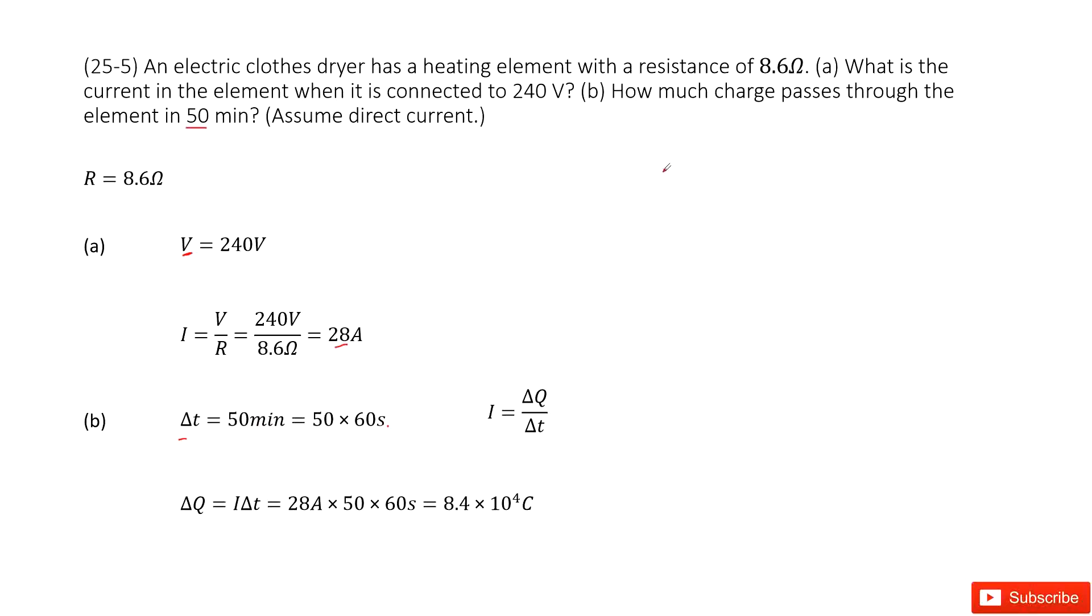We need to find the charge, ΔQ. We know the definition of current: current equals the change in charge divided by Δt. So we can get ΔQ = I × Δt. Input the current and the time, and we get the answer.